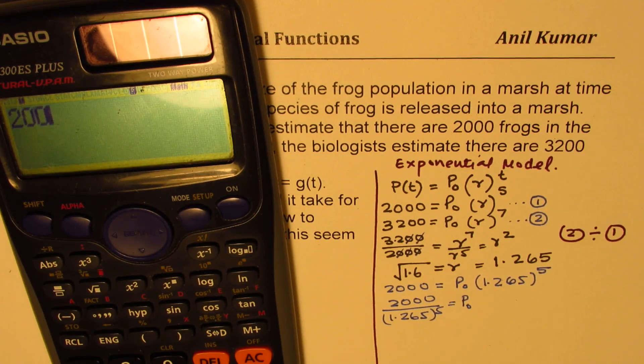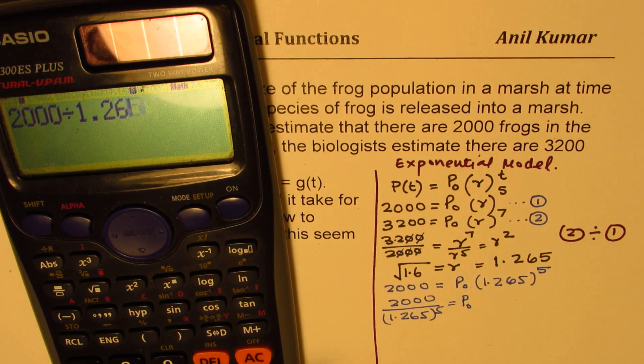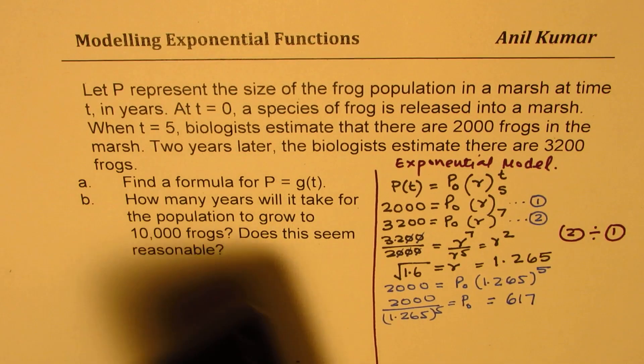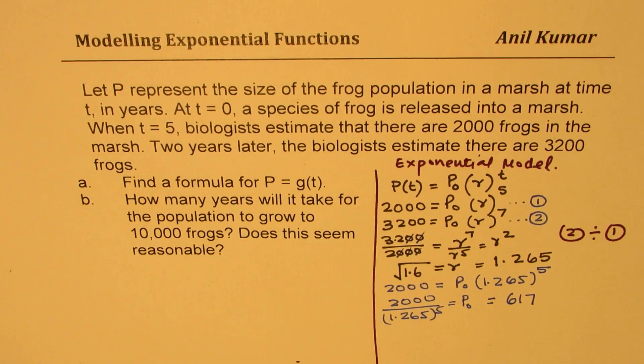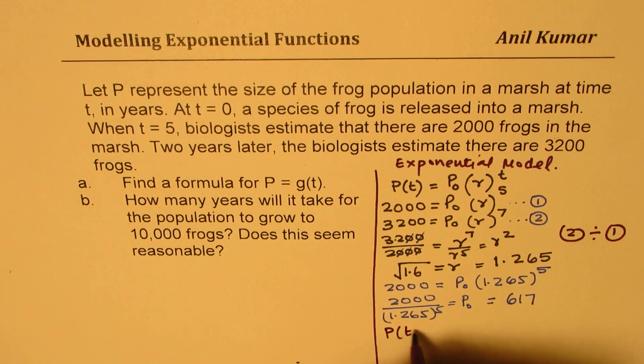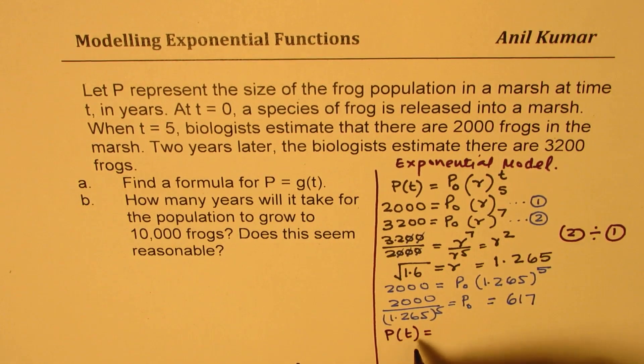So it is 2,000 divided by 1.265 to the power of 5, which is equal to 617, right? So it is always a round number. So we'll take 617 as our initial population. And that gives us the formula, which is P of t at any time the frog population, and t is year since it was introduced.